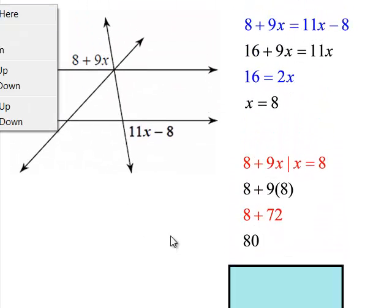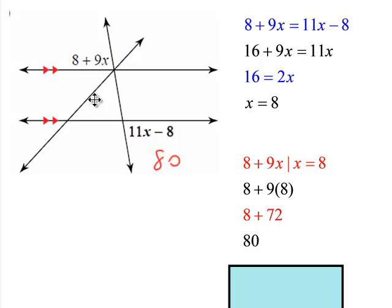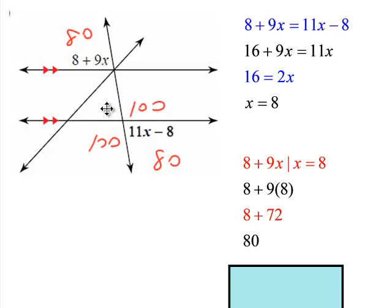Now you know that this angle is 80 degrees, and so the missing angle here is 100. That's 100, this is 80, and we've got an 80 here as well.